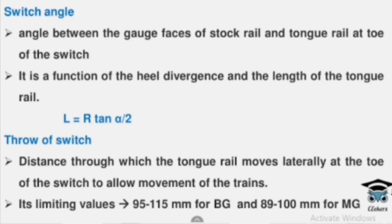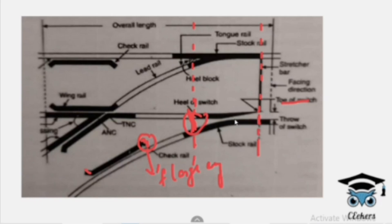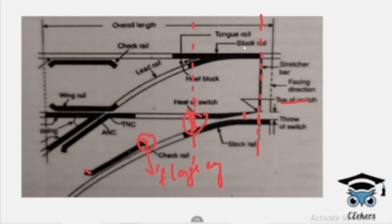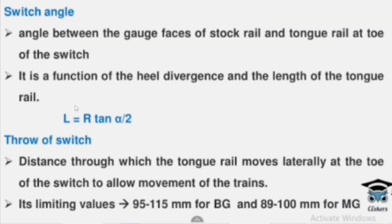Next, we will check the switch angle. The switch angle is the angle between the gauge faces of the stock rail and the tongue rail at the toe of switch. This is a tapering section and here we have a switch angle. The switch angle alpha is a function of heel divergence and length of the tongue rail. The length of the tongue rail is equal to r into tan(alpha/2).